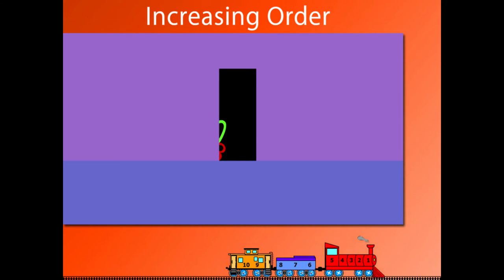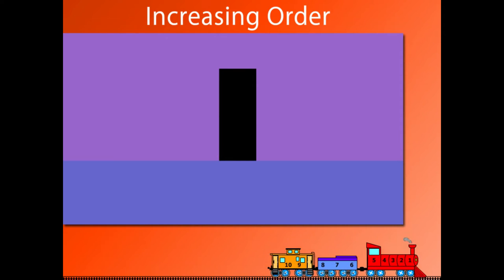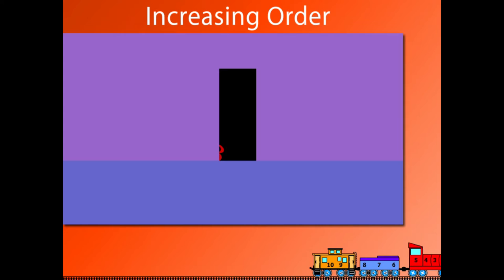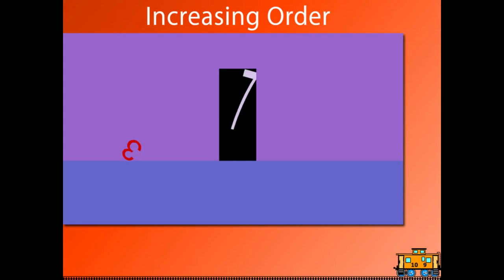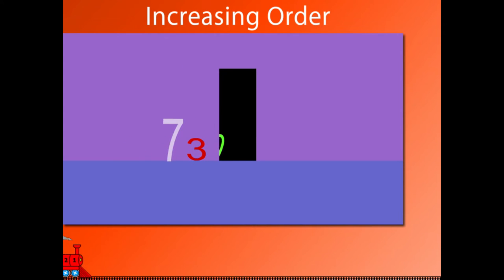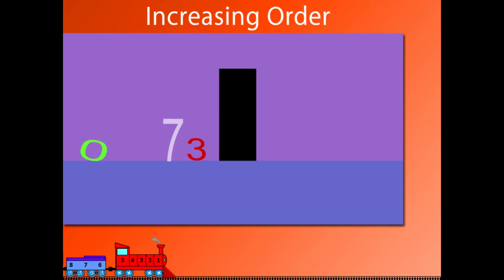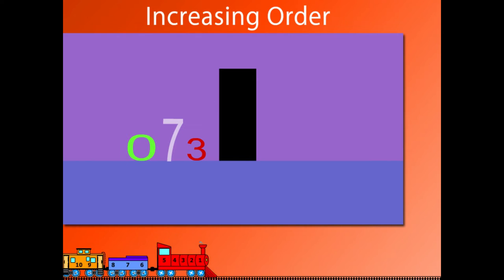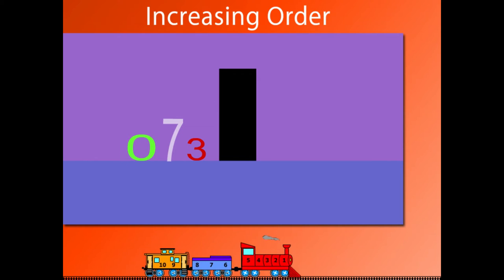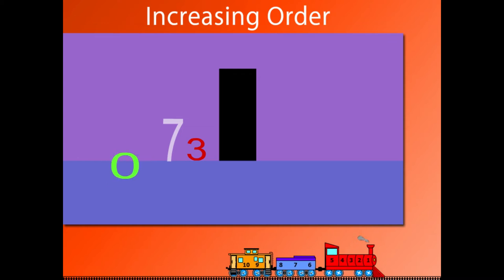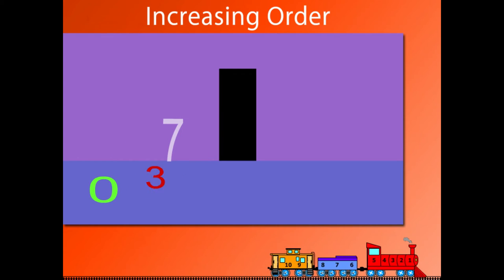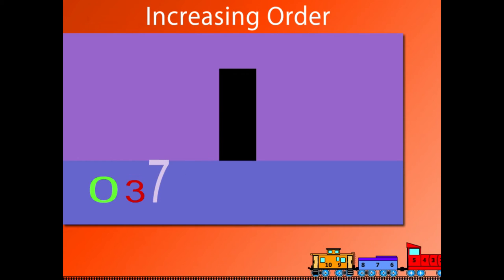Here come numbers from behind the wall: 3, 7, and 0. 0 is the smallest of the three. So in ascending order, they will read as 0, 3, 7.